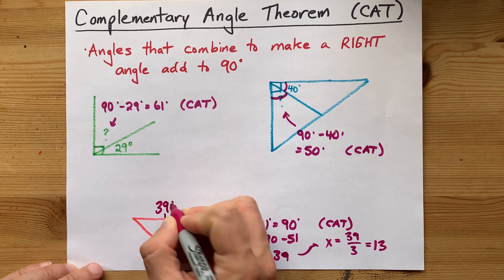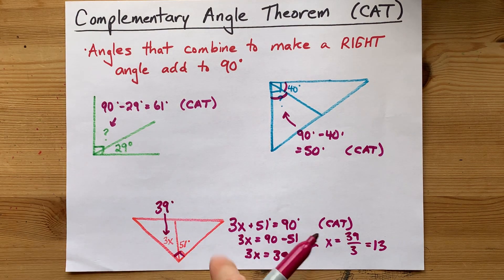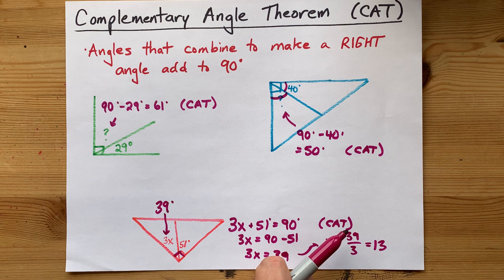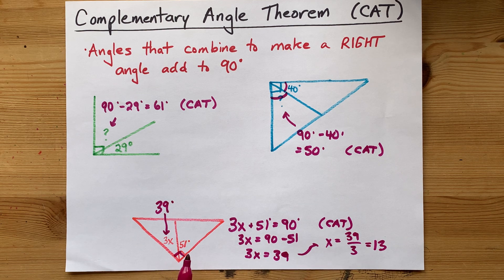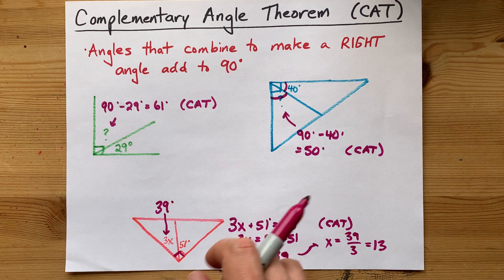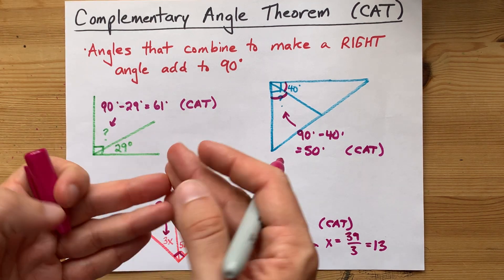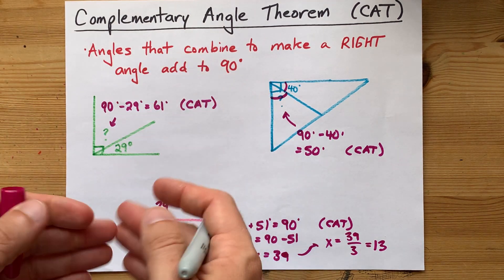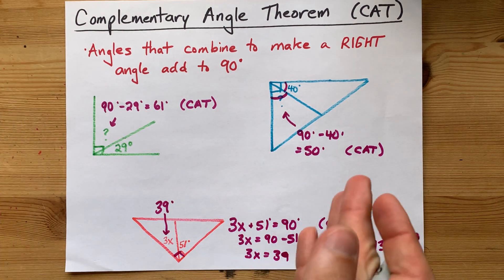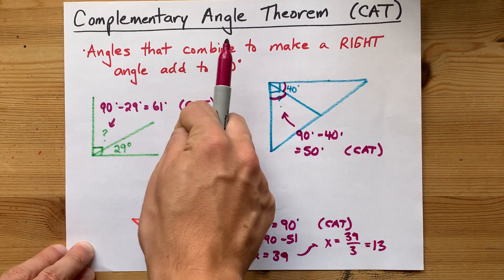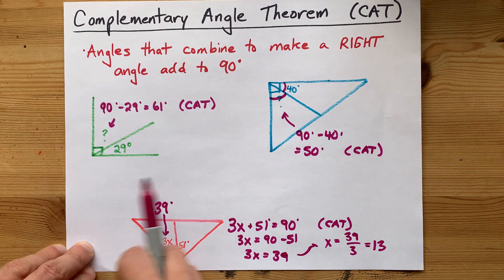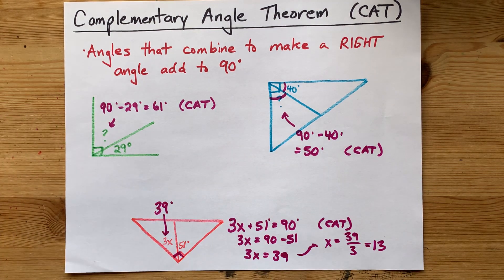But where we use the complementary angle theorem is wherever we stated that the two things that add up to a right angle add up to 90. It's just knowing that complementary angles are 90 degree angles. But hey, cite your sources, say CAT when you use this, and best of luck.